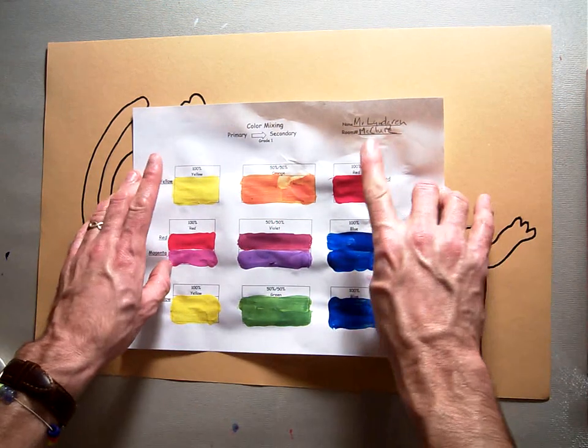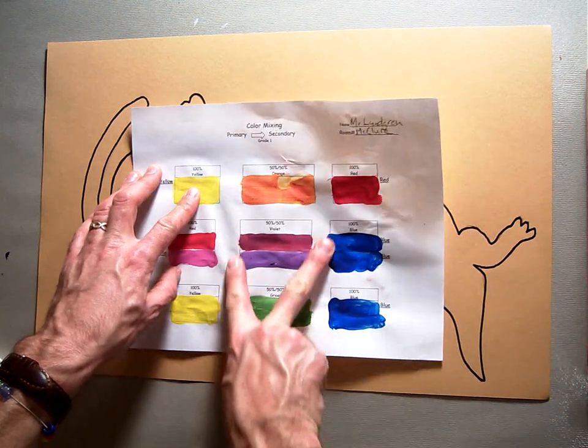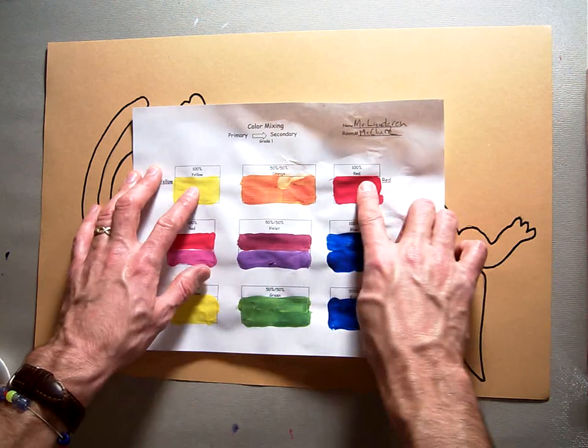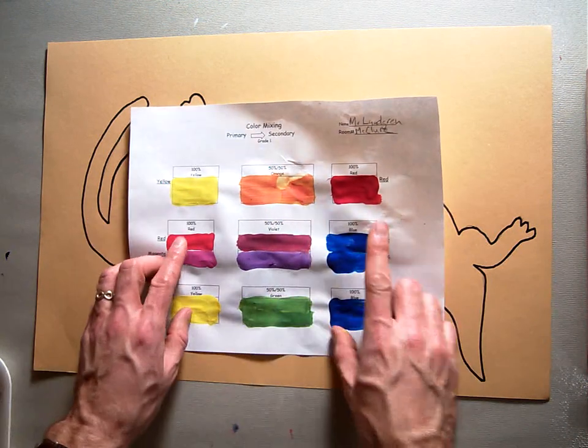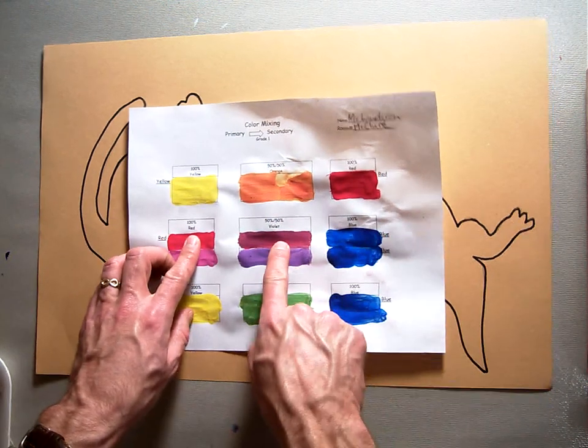We learned that when we mix our primary colors together, we get what's called the secondary colors. So you have red and yellow that make orange when mixed together, you have blue and red and together they make violet, and then blue and yellow mixed together you get green.